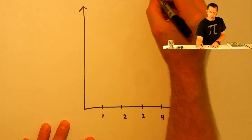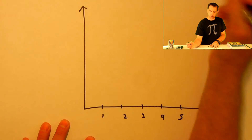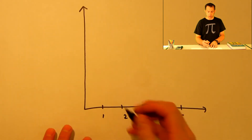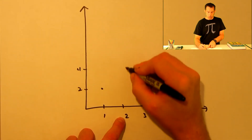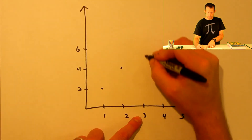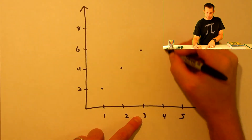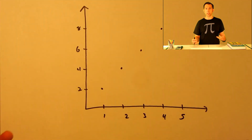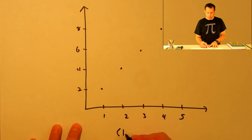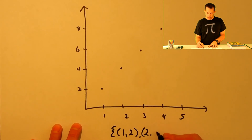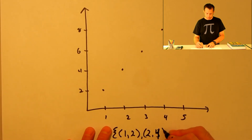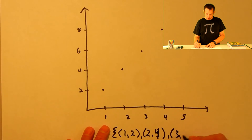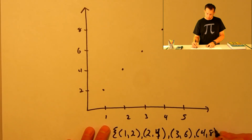So if our sequence is 2, 4, 6, 8, graphing it means plotting the points: the first term 2, the second term 4, the third term 6, and the fourth term 8. The graph of a sequence is really just a scatter plot because we're graphing discrete points — point (1, 2), point (2, 4), point (3, 6), and point (4, 8), and so on.